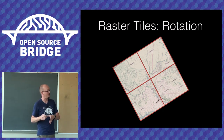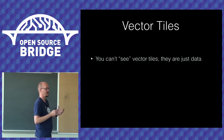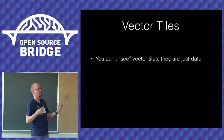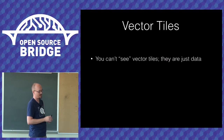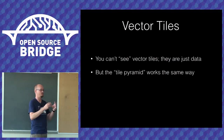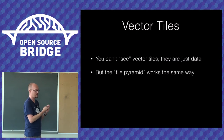To contrast raster tiles with vector tiles: vector tiles are just data — you can't really see them. They're chunked in the same way, a square of the earth in a particular resolution, but it's a binary data chunk that comes down and we draw it on the mobile device. The tile pyramid concept works the same way. The key difference with vector rendering is that you make that zoom transition continuous, as opposed to the sudden jump in raster tiles from one image to four below it.